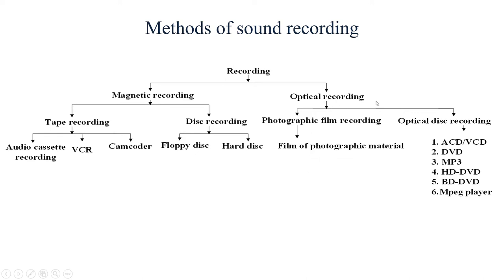Optical recording is categorized into two categories: optical recording on the photographic film, called photographic film recording, where film or photographic material is used to record audio or video; and optical disc recording, which includes audio CD, video CD, DVD (digital versatile disc), MP3, HD DVDs, BD DVDs, and MPEG players. These are the types and categorizations of recording.